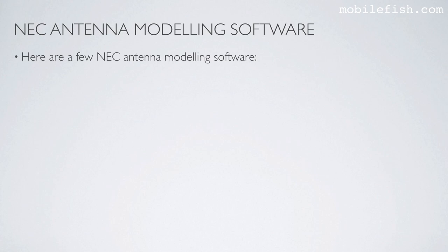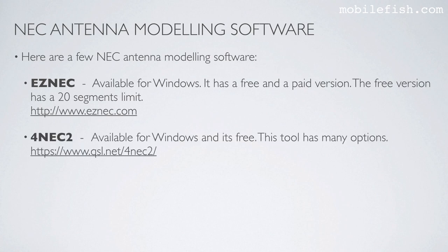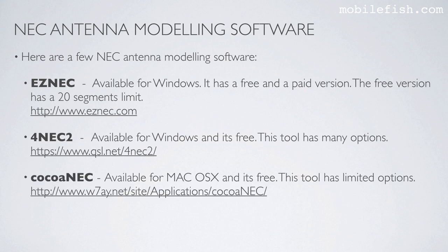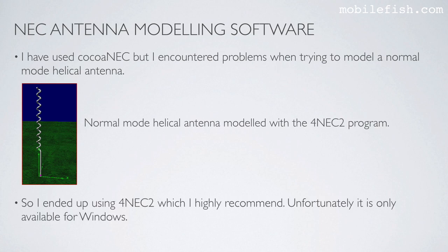Here are a few NEC antenna modeling software options. EasyNEC is available for Windows and has a free and a paid version; the free version has a 20-segment limit. 4NEC2 is available for Windows and is free — this tool has many options. And CocoaNEC is available for Mac OS X and is free, though it has limited options. I have used CocoaNEC but encountered problems when trying to model a normal mode helical antenna. I modeled that helical antenna with 4NEC2 and ended up using 4NEC2, which I highly recommend. Unfortunately, it is only available for Windows.